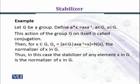So here under conjugation, if x is fixed, then this G_x set can be denoted as N(x), the normalizer of x in G. Thus in this case, the stabilizer of any element x in G is the normalizer of x in G. This is a very interesting example.